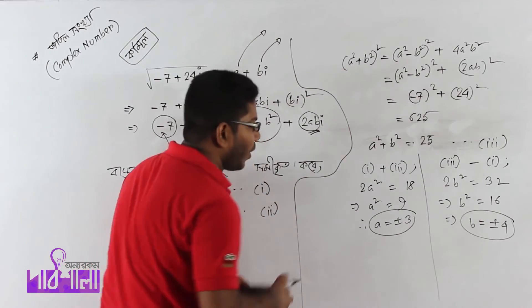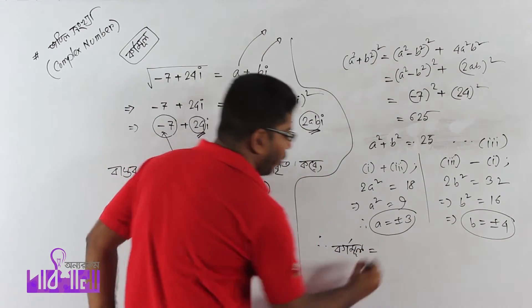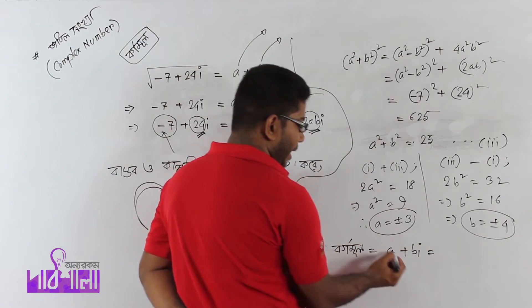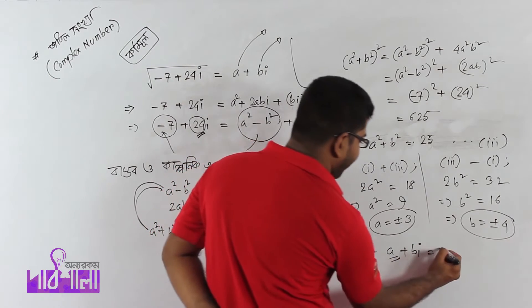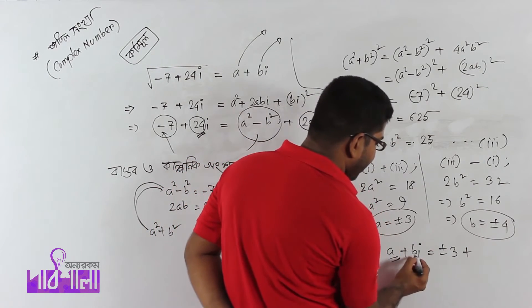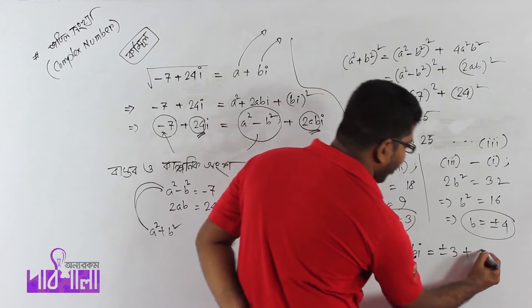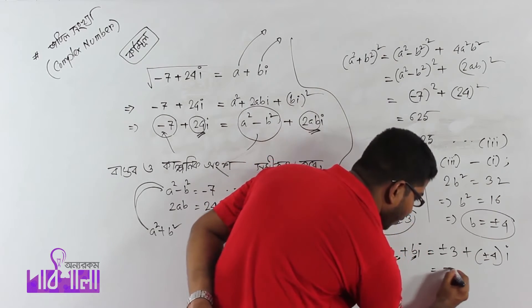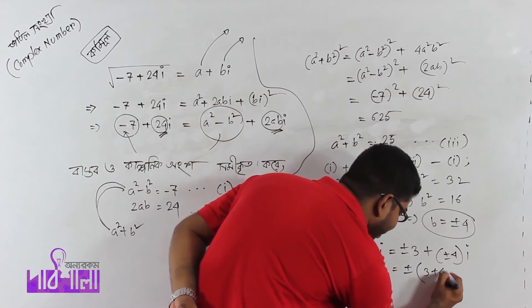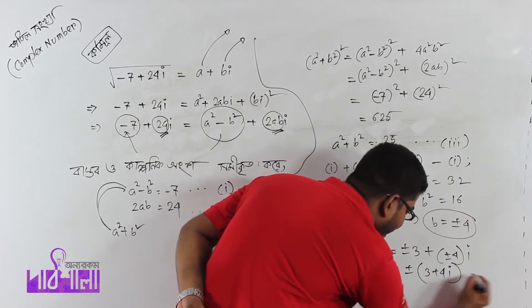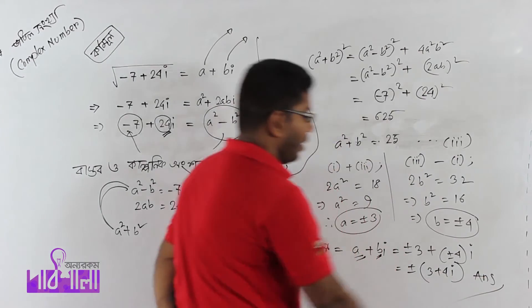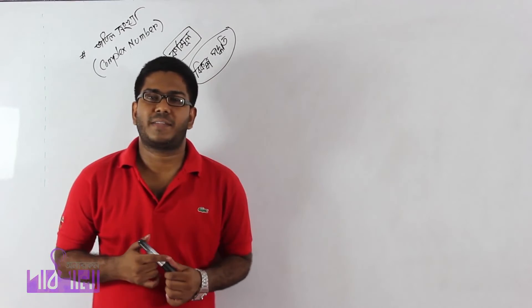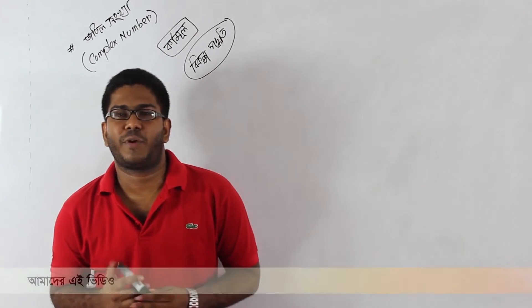Therefore a plus bi equals plus or minus 3 plus 4i, giving us plus or minus 3 plus 4i as the final answer.